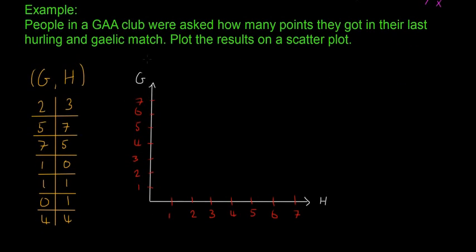Our example here is people in a GAA club were asked how many points they got in their last hurling and Gaelic match. Plot the results on a scatter plot. Each paired point counts for a person, so on the left hand side it's Gaelic and the right is hurling. This person got two points in the last Gaelic match and then three in the last hurling, five and seven, seven and five, etc.